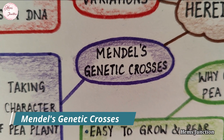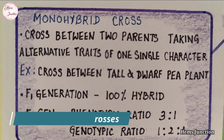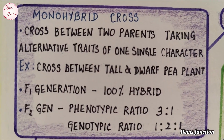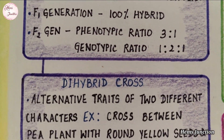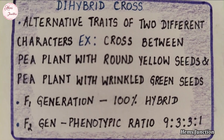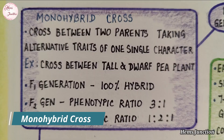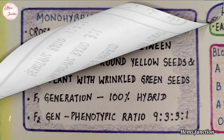Mendel's genetic crosses: Gregor Johan Mendel was the first to explain the laws of inheritance by conducting experiments on garden pea plant. He conducted various crosses such as monohybrid cross and dihybrid cross. He observed that the inheritance of traits followed certain patterns.